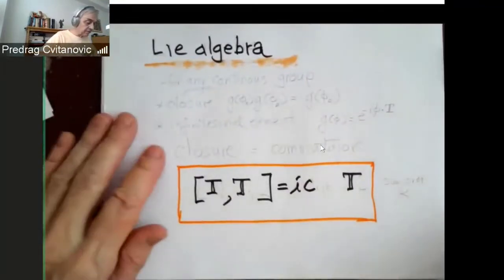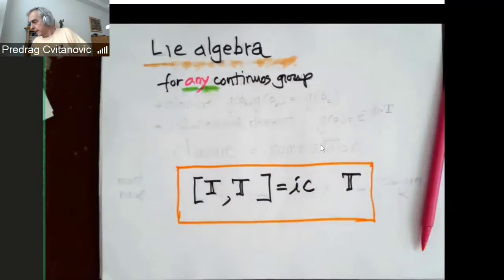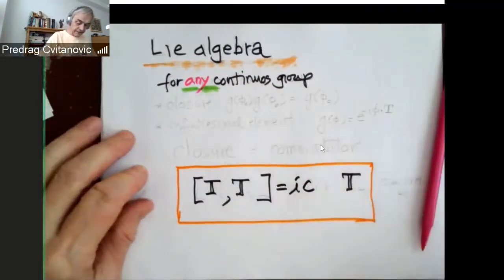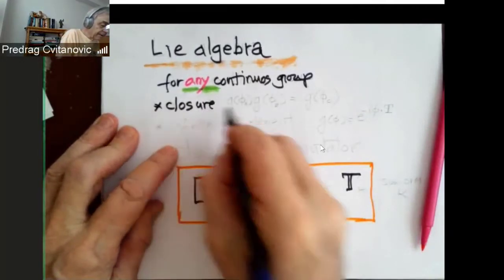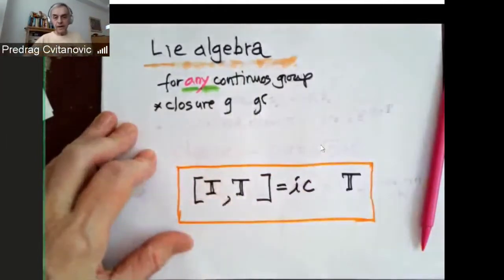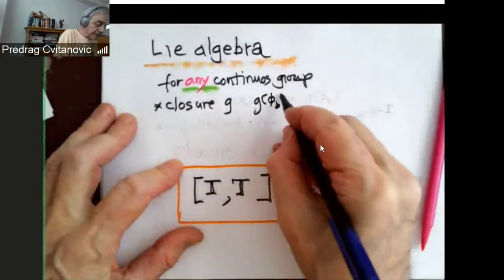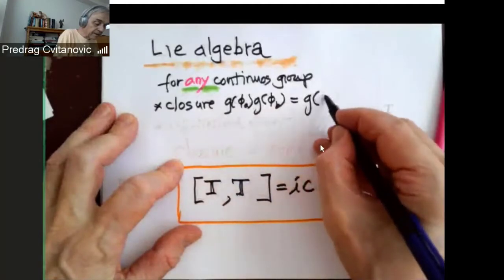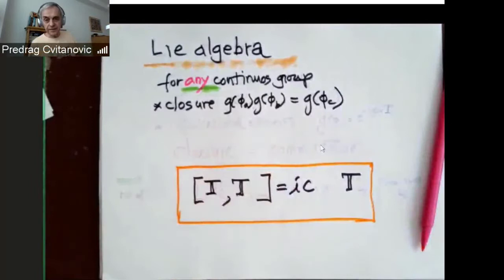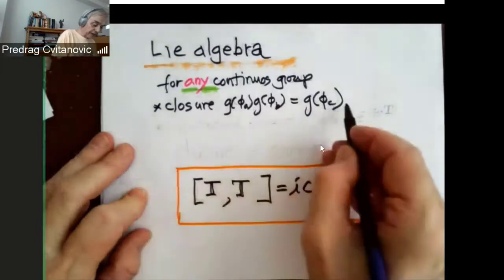What now happens for any continuous group, not just rotations in three dimensions, the same strategy that just outlined works, which is you need closure, otherwise you don't have a group. It says that if I apply group operation in no matter what setting, in thousand dimensions or three dimensions, and apply another group operations, that will be some group operation parametrized whatever coordinates I use.